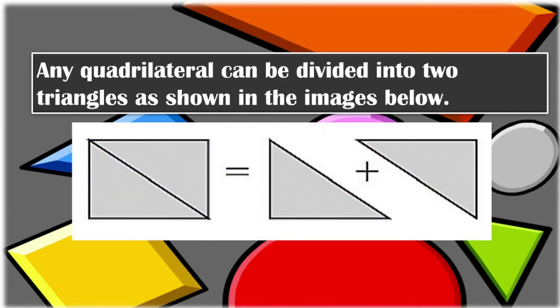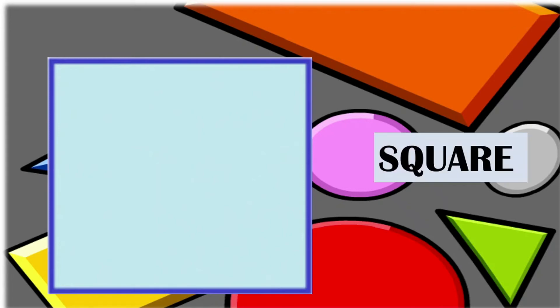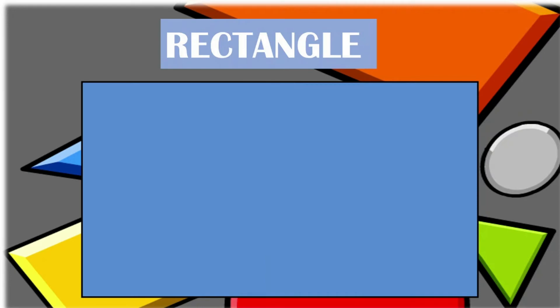When we have a quadrilateral, it can be divided into two triangles. For example, we have a rectangle — when we divide it, we get two triangles: 180 plus 180 equals 360 degrees. Another example of a quadrilateral is a square. A square has 360 degrees, and when divided in the middle, we get two triangles. A rectangle also has 360 degrees, and when divided into two, we form two triangles.